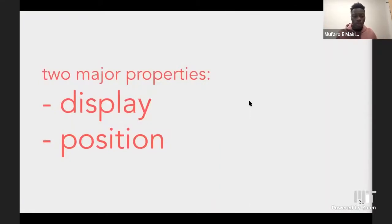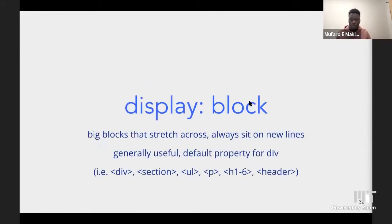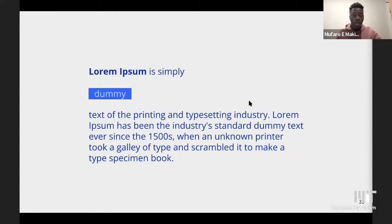Now moving on to layouts. We're going to talk about two major properties: display and position. Display determines how elements are sized and sit within each other. The first one is display block, which is the default for some elements. When you have display block on an element, it will stretch across the window and always sit on a new line. To show how this looks: the word 'dummy' appears on a new line because of the property display block.